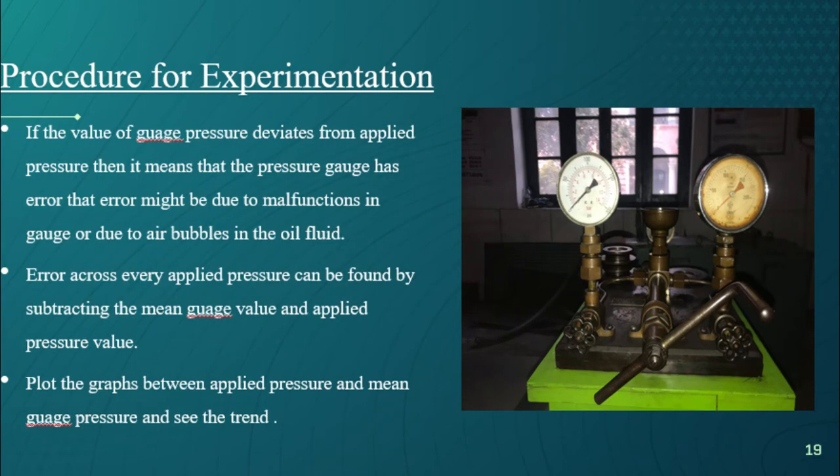If the value of gauge pressure deviates from applied pressure, then it means that the pressure gauge has error. That error might be due to malfunctions in gauge or due to air bubbles in the oil fluid. Error across every applied pressure can be found by subtracting the mean gauge value and applied pressure value.